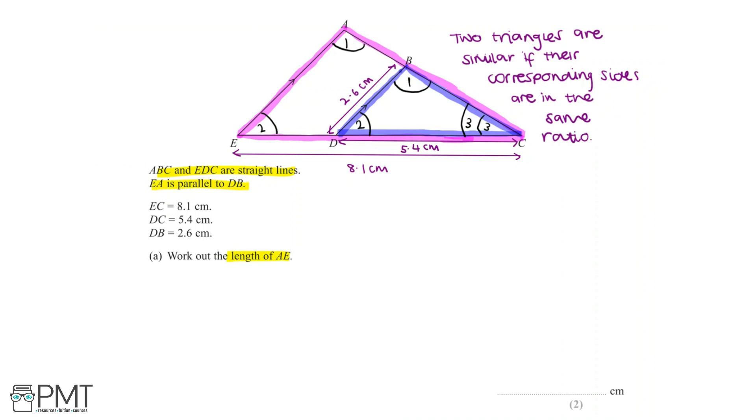So now we need to prove that these angles are the same size. For angles 1 and 2, we can do this using our rules for angles in parallel lines. Since line AE and line DB are parallel, we can say that angle 1 for triangle AEC and angle 1 for triangle BDC are equal, because these angles are corresponding.